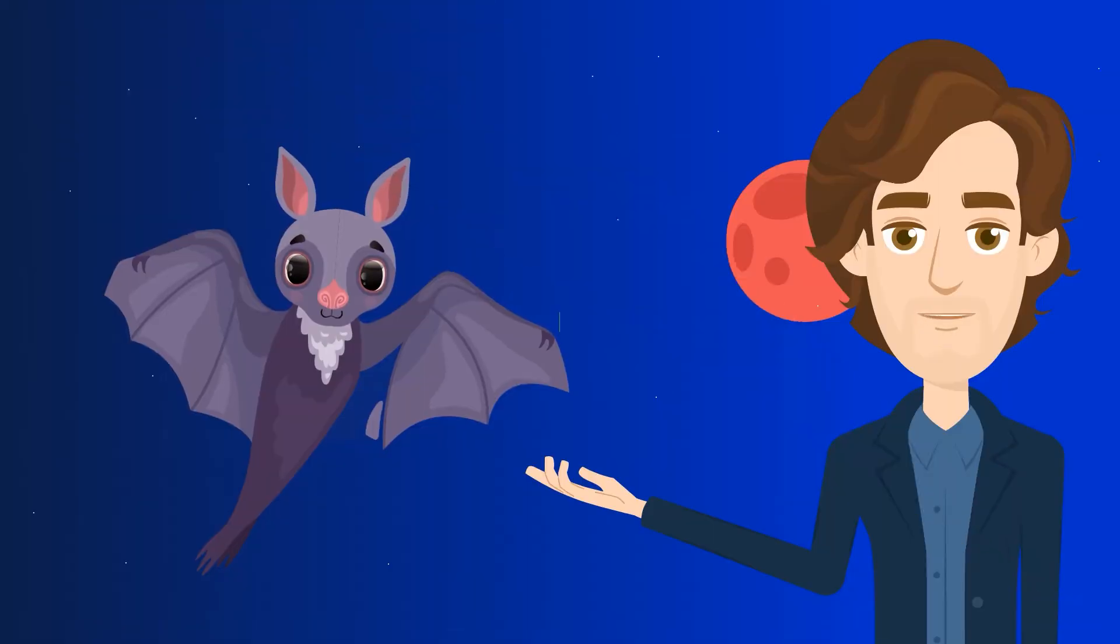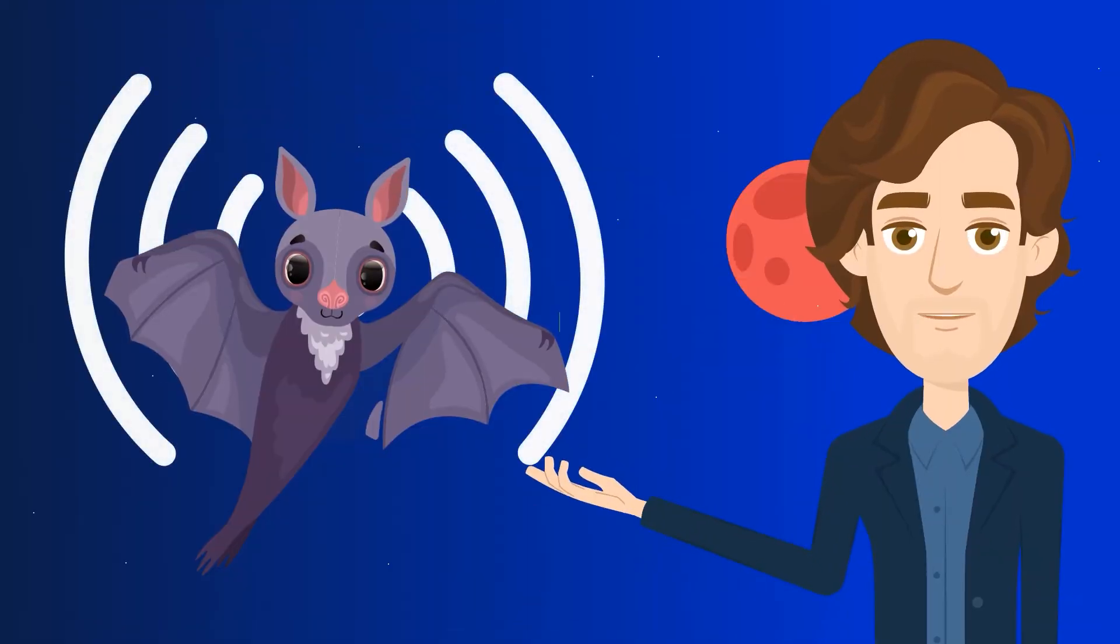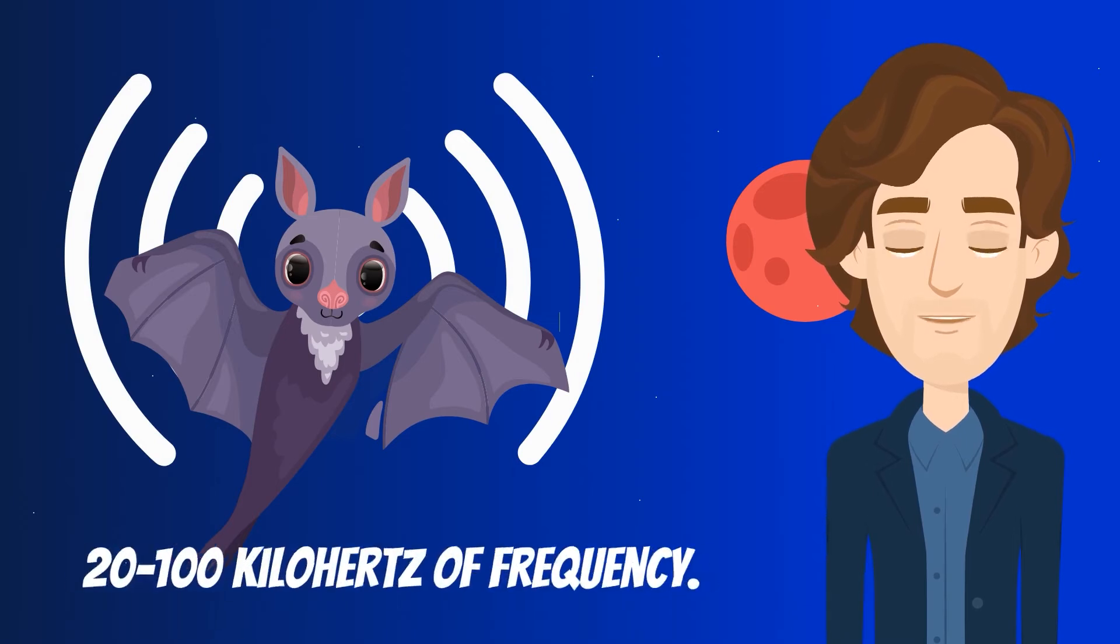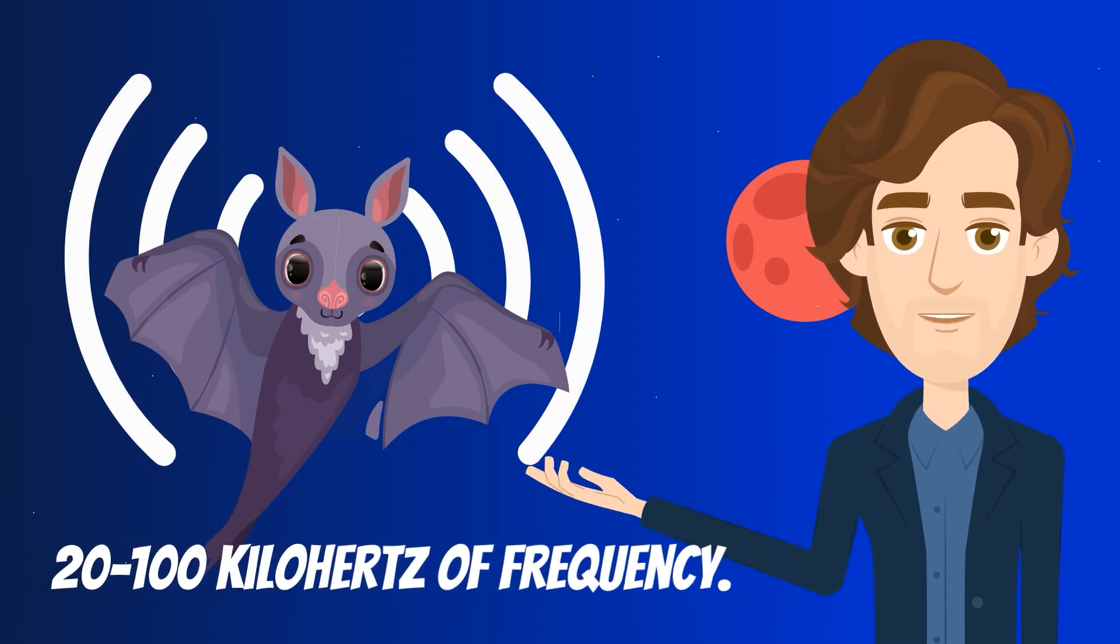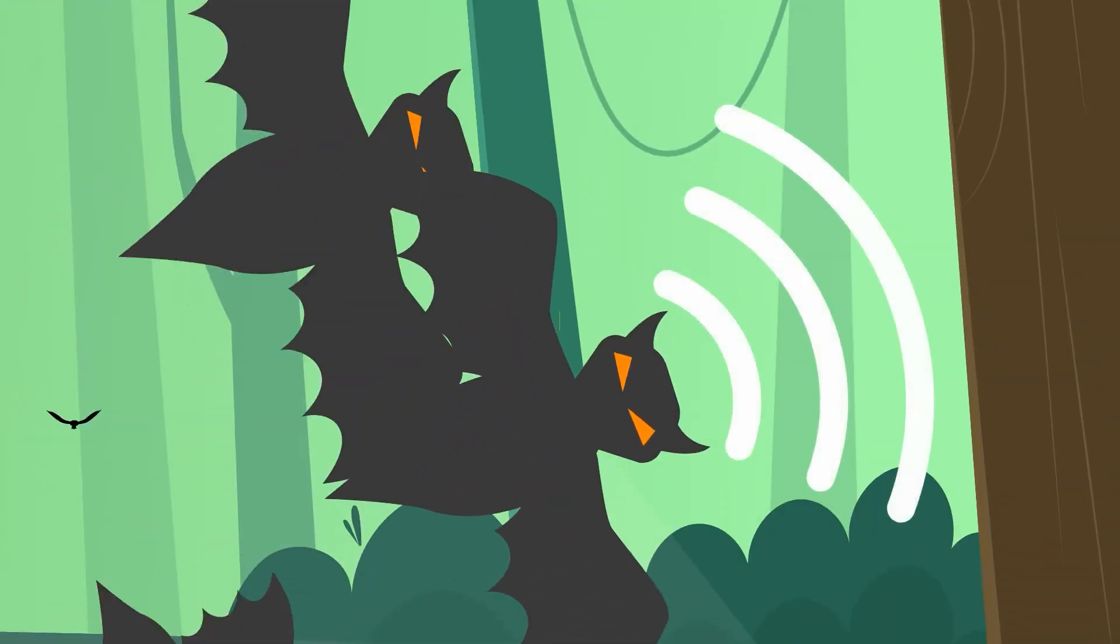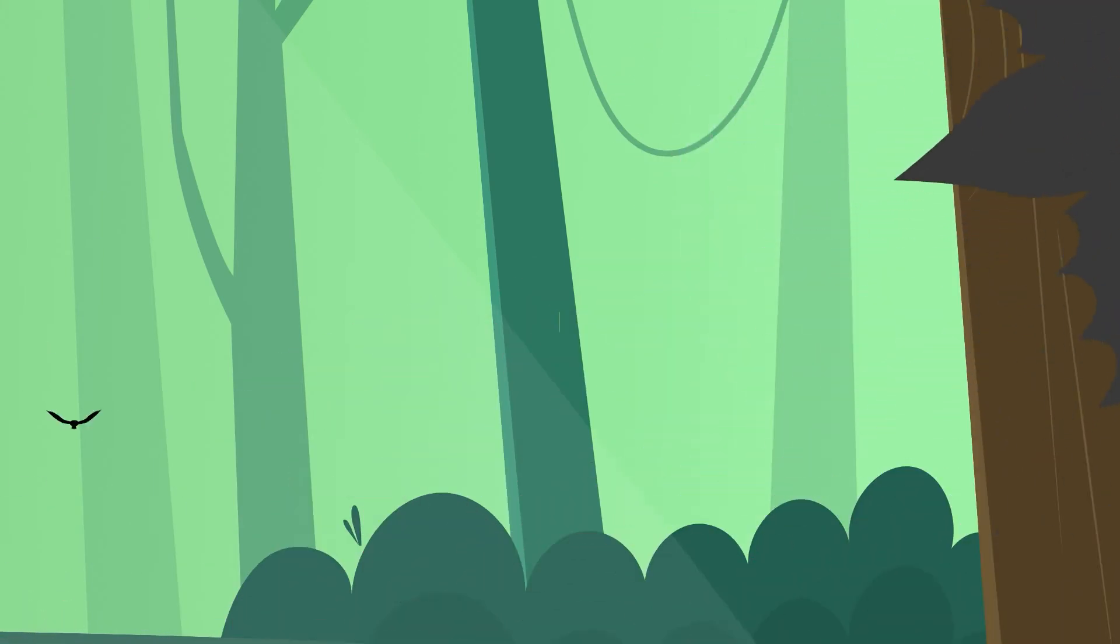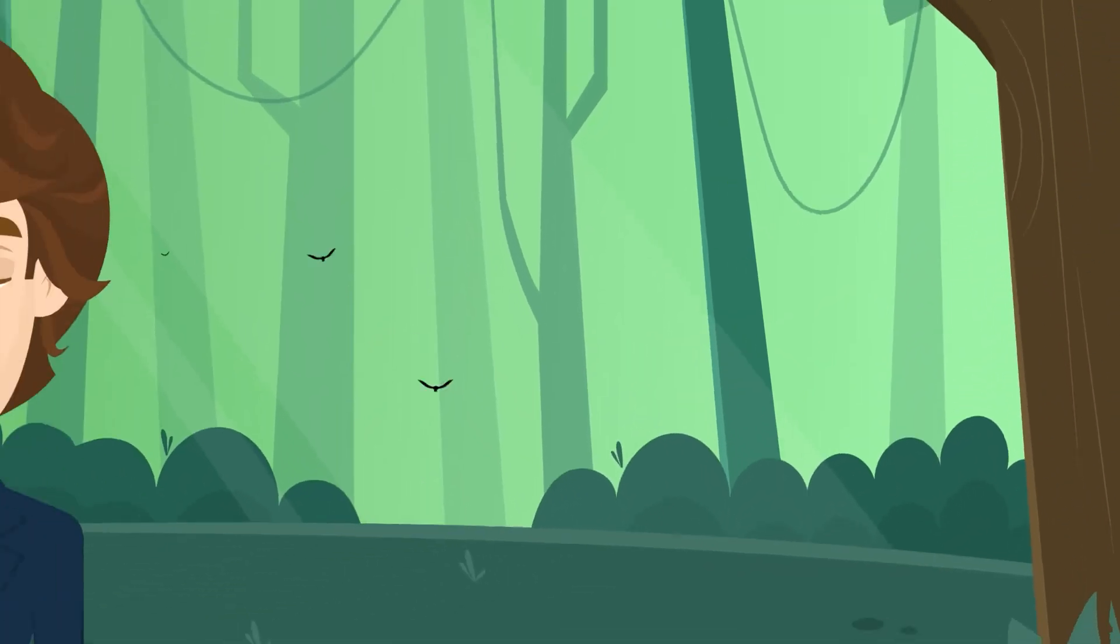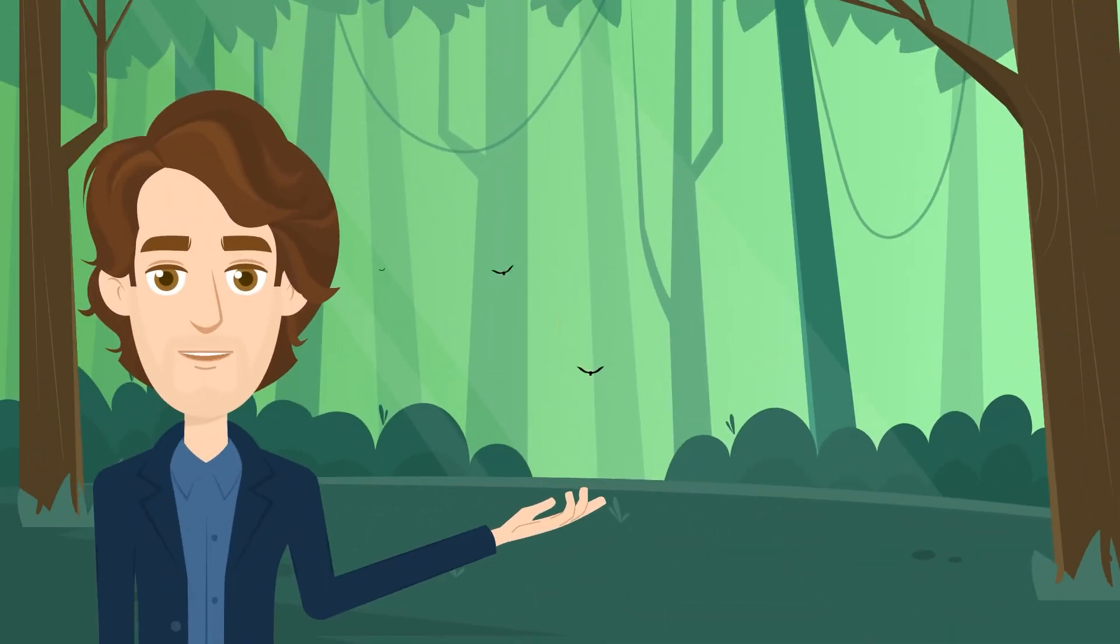Bats can emit an ultrasonic sound, so high-pitched that ordinary humans can't hear, around 20 to 100 kilohertz of frequency. This scream then hits objects around the bat and bounces back to the animal as echoes. These echoes serve as a mental map for the bat, allowing it to see its surrounding in the dark.